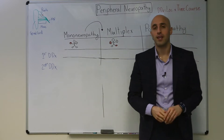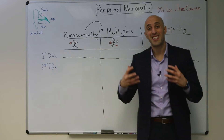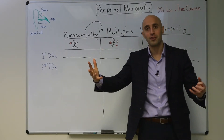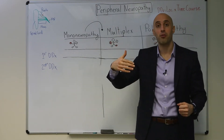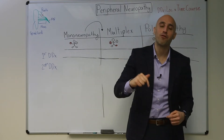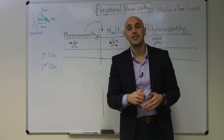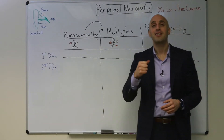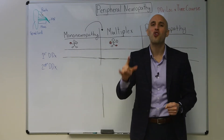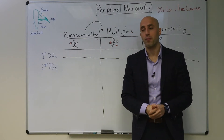Before we jump into peripheral neuropathy, we first have to ask the question: what do peripheral nerves do? Peripheral nerves carry the motor information from the brain to your muscles, and the sensory information from the environment to your brain. They're also involved in the efferent and afferent arm of the autonomic nervous system. Therefore, when should you consider a peripheral neuropathy? Basically, if your patient comes in with sensory and/or motor and/or less commonly autonomic symptoms, you should consider a peripheral neuropathy.